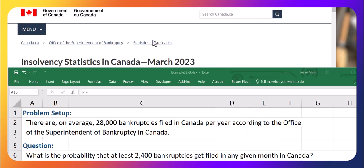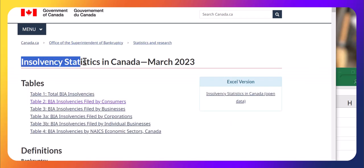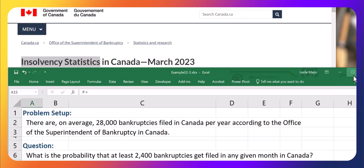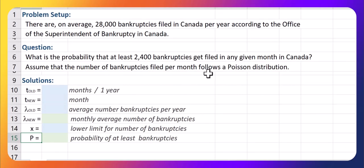In this video we're going to look at the number of insolvencies in Canada, or if you will, bankruptcies. Based on previous statistics, there were on average 28,000 bankruptcies filed in Canada per year according to the Office of the Superintendent of Bankruptcy in Canada.